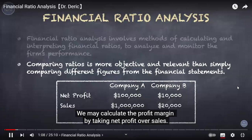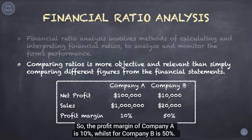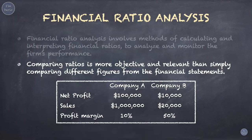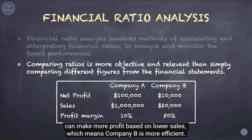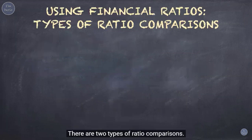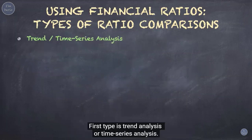We may calculate the profit margin by taking net profit over sales. So the profit margin of company A is 10% whilst for company B is 50%. Now it is obvious that company B is better than company A, because company B can make more profit based on lower sales, which means company B is more efficient. There are two types of ratio comparisons. The first type is trend analysis or time series analysis.